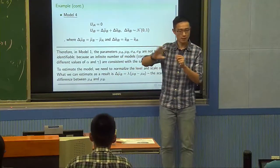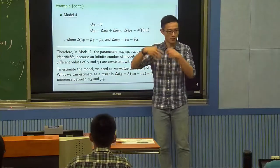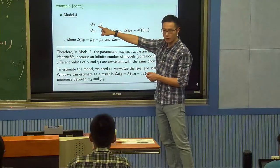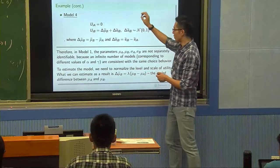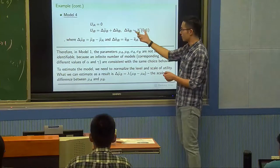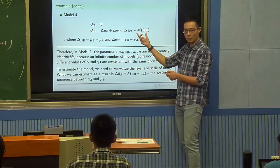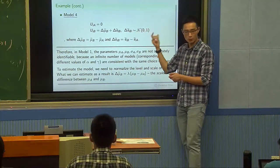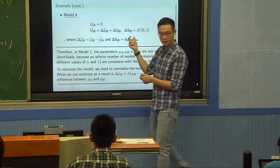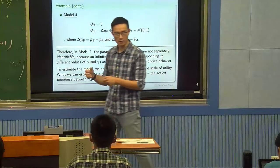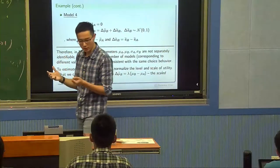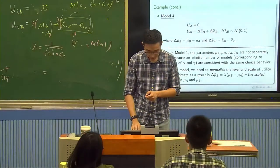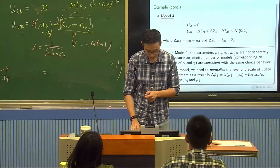In binary logistic regression, we always set one level as the reference, making it zero — exactly because level is unimportant. You can add or subtract any constant and get the same choice problem. There's no way to separately identify both levels; you can only identify the difference between them.